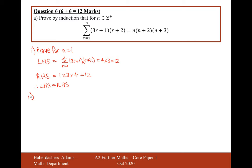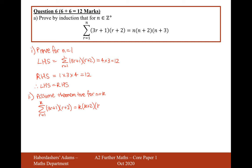Part 2: assume theorem true for n equals k. That's saying that if you want to add up the first k numbers of this expression — 3r plus 1 times r plus 2 — then you can use this formula on the right-hand side, which for k is going to be k times k plus 2 times k plus 3. So we can assume our theorem works up to k.